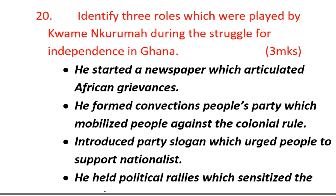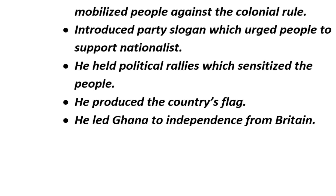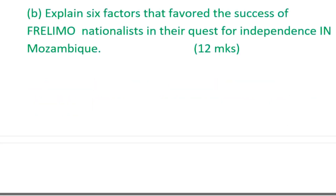Question twenty: identify the roles played by Kwame Nkrumah during the struggle for independence in Ghana. He started a newspaper which articulated African grievances. He formed the Convention People's Party (CPP) which mobilized people against colonial rule. He introduced party slogans which urged people to support nationalists. He held political rallies which energized the people. He produced the country's flag. He led Ghana to independence from Britain.